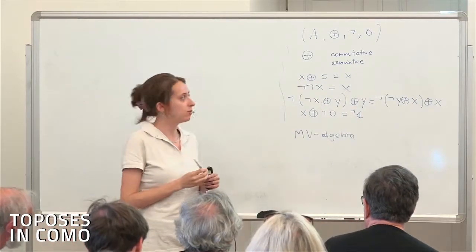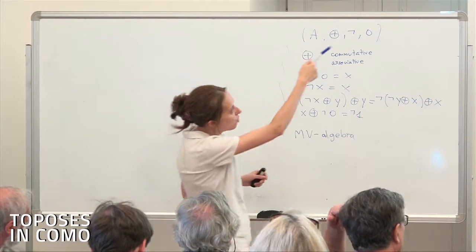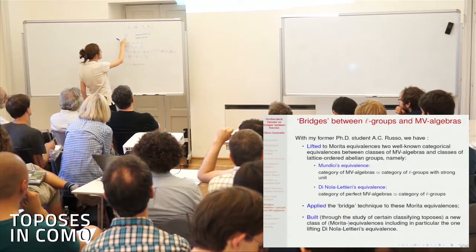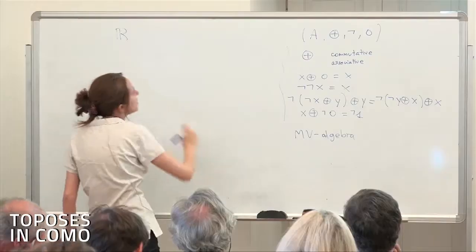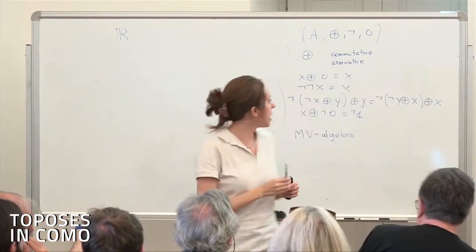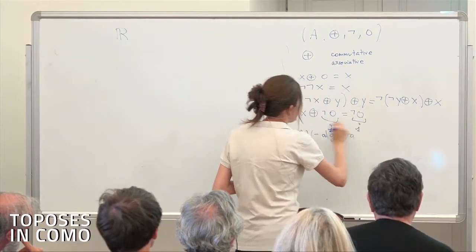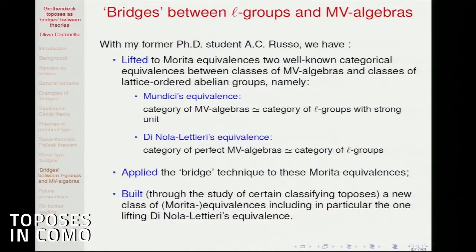An L-group with a strong unit is a lattice-ordered abelian group — that is, an abelian group with a partial order compatible with addition and inducing a lattice structure. A strong unit is a positive element such that any positive element x is less than or equal to some natural multiple n·u of the unit u for some n. In geometric logic, since we don't want to quantify over natural numbers, we express this condition using an infinitary disjunction. So the theory of L-groups with strong unit involves this infinitary geometric sequent to express the strong unit property.